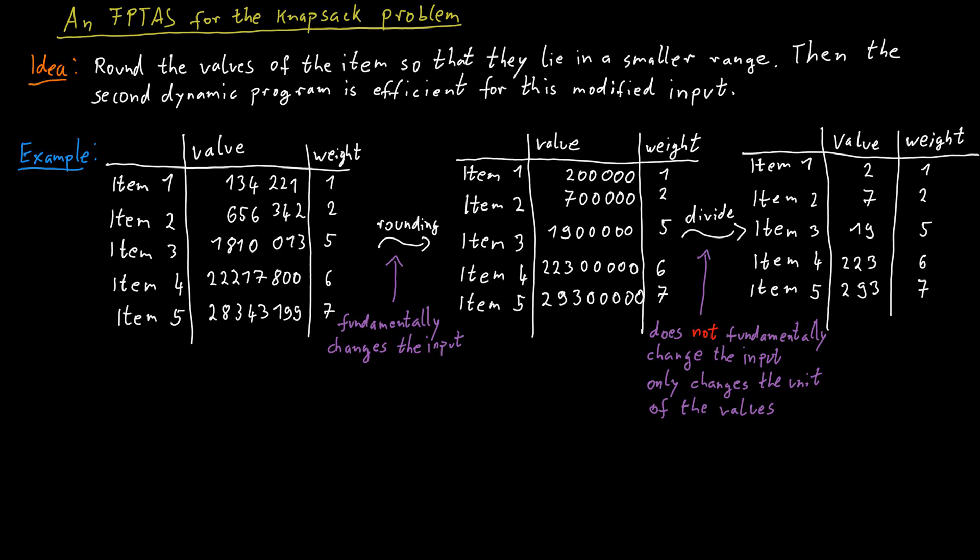None of this fundamentally changes what's going on here and which subset of items we should select, as long as the unit for all the items is the same. So just dividing all the values by 100,000 doesn't really change anything. It just changes the unit we are dealing with. So once again, because this is important, the first step, the rounding up, changes the input somewhat.